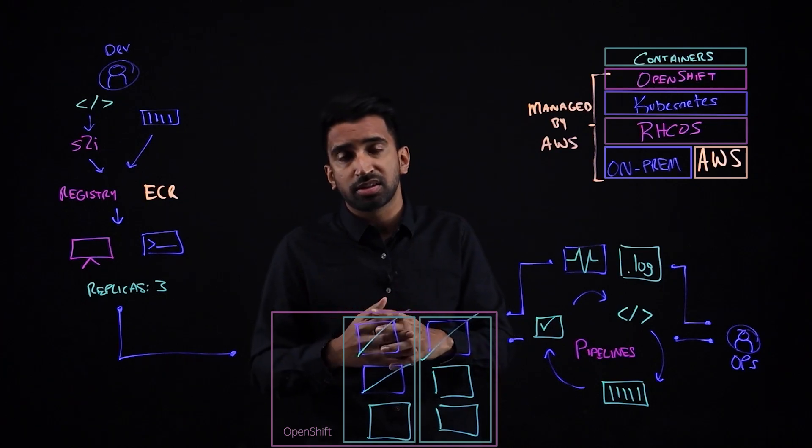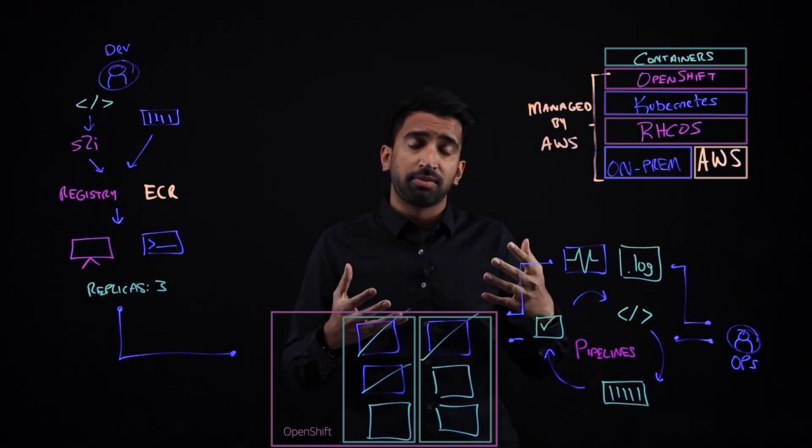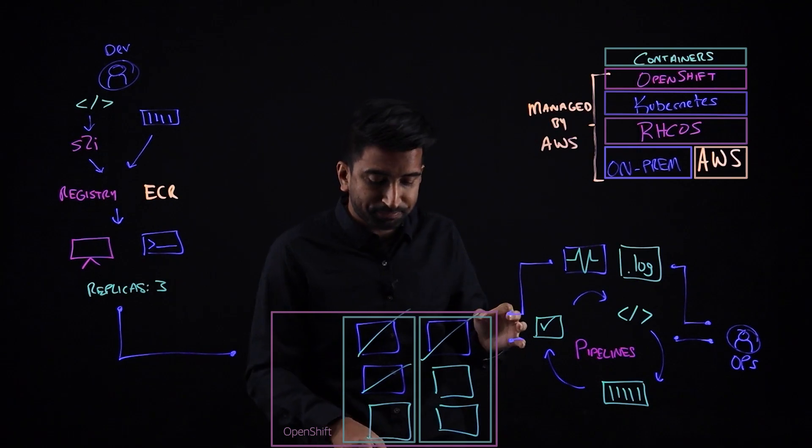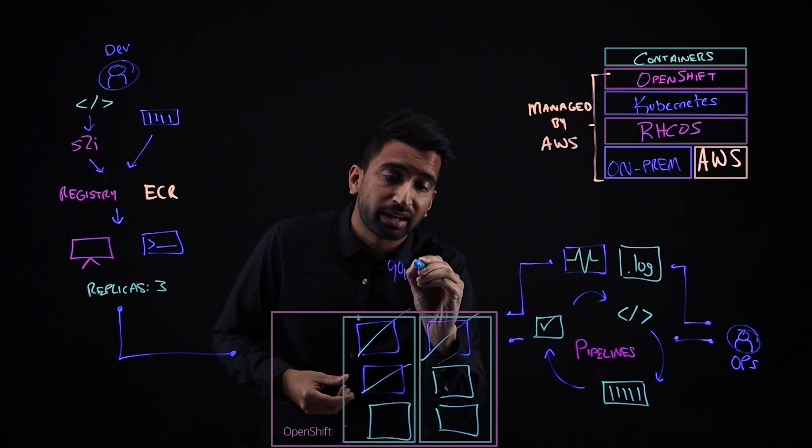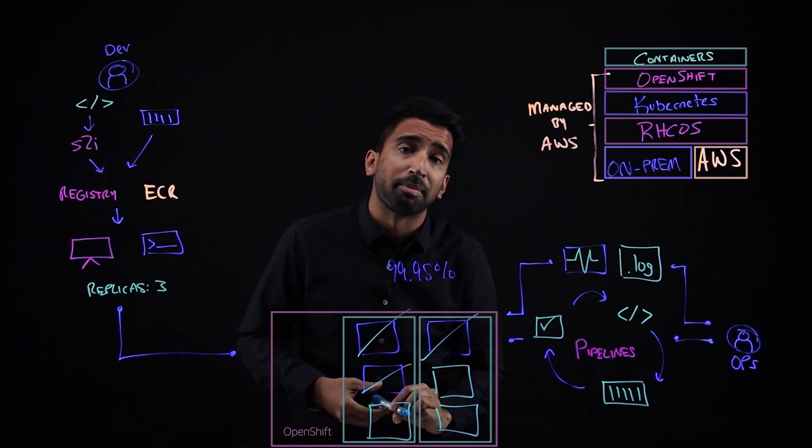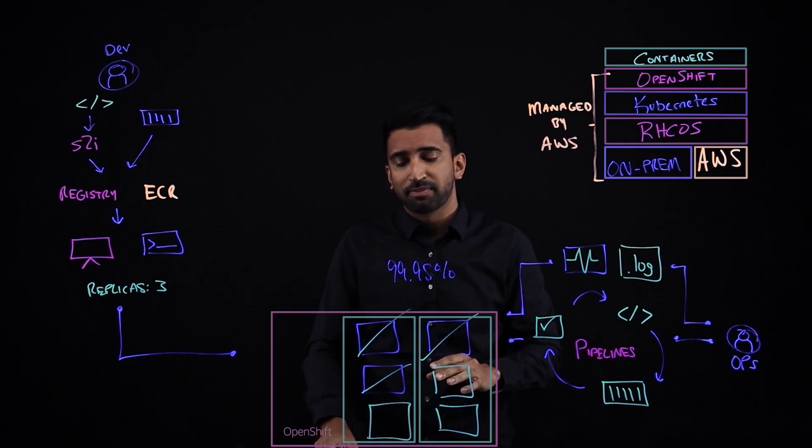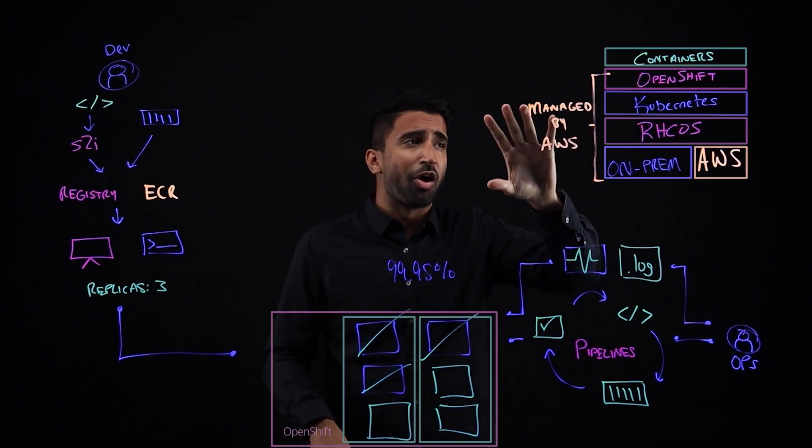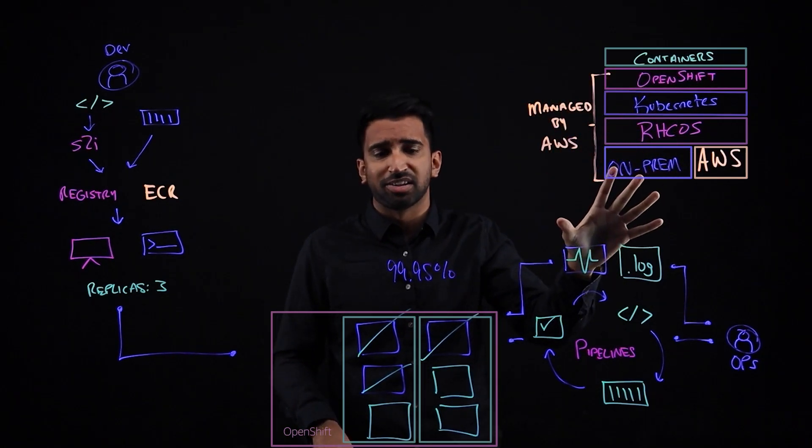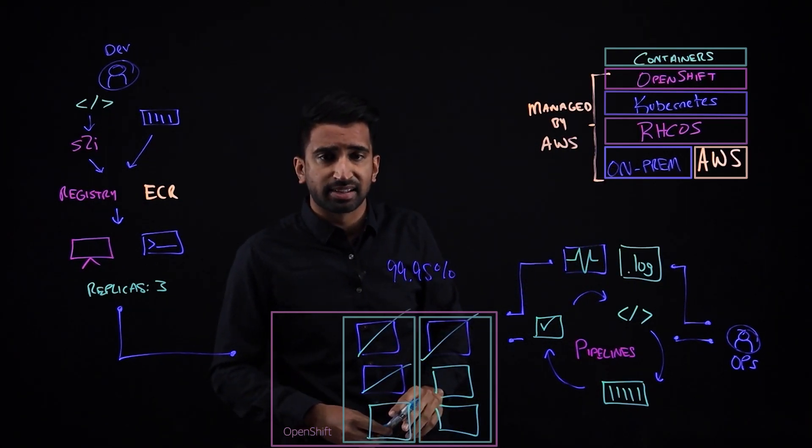That's possible because ROSA is jointly supported by Red Hat and AWS. It's an important distinction here. The platform itself is operated by Red Hat SREs. Essentially, what that means is we're able to offer a 99.95% uptime SLA on ROSA. It's one of the key advantages of ROSA that we discussed so far. It's automating some of the steps of managing, creating, patching clusters, getting that SLA.